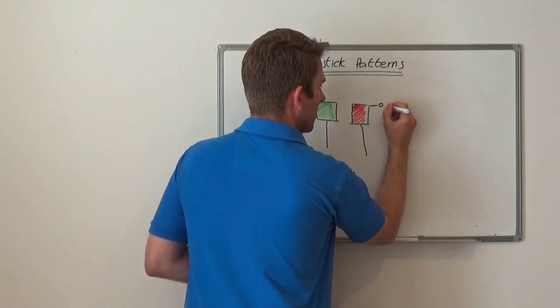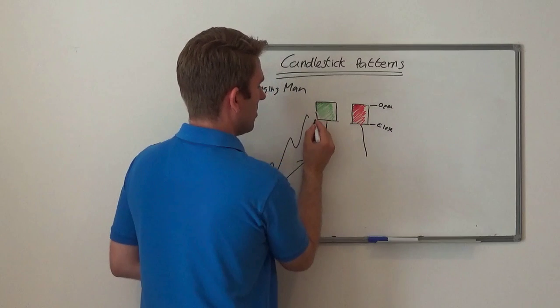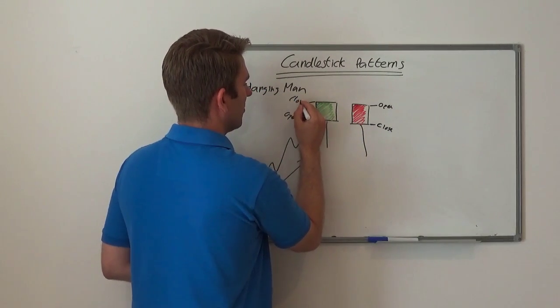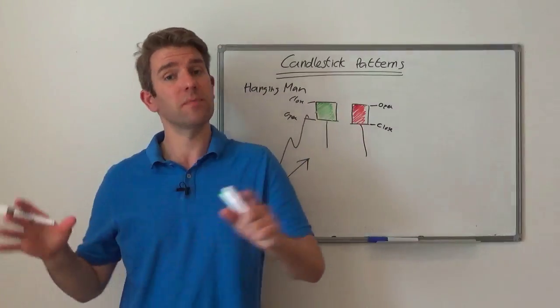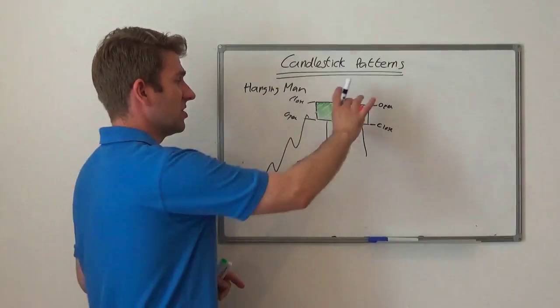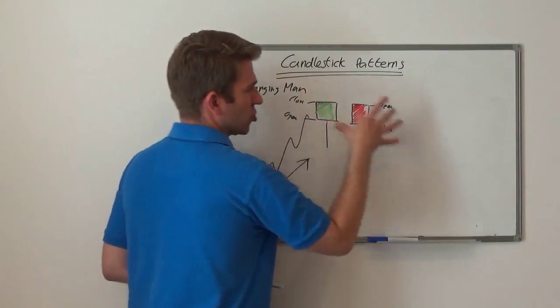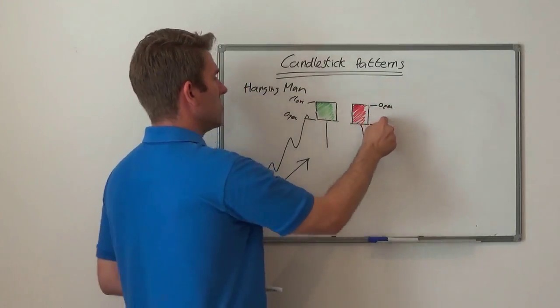Obviously if you've got a red body, that's going to be your open here and that's your close here. If there's a green body then it's vice versa - there's your open and there's your close. The shape of the body, textbooks may change it, but the difference between those two isn't so relevant.